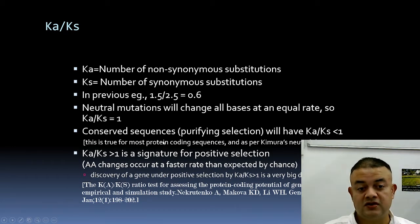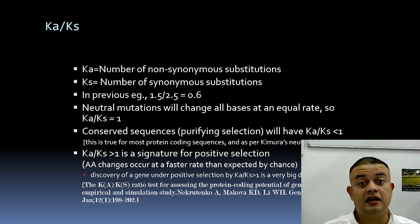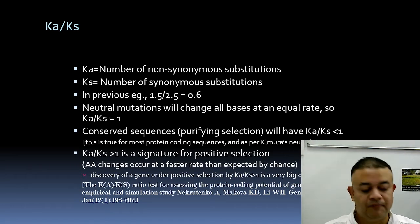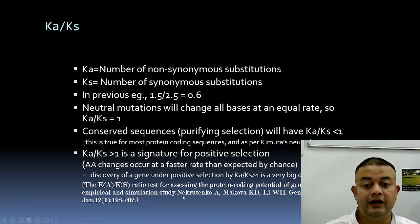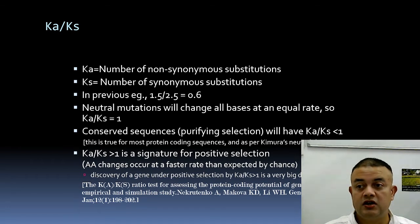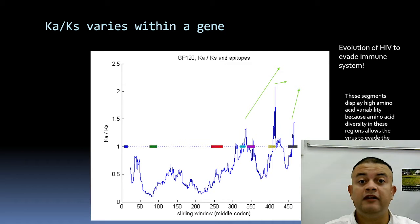Ka/Ks greater than one is a rarity. If you ever observe that, it's a very interesting observation — you can get a high-impact paper. It's a big deal. The Ka/Ks ratio can also be used to test the protein-coding potential of genomic regions. Fast-evolving regions within genes will have a high Ka/Ks ratio because those regions are under positive selection pressure.